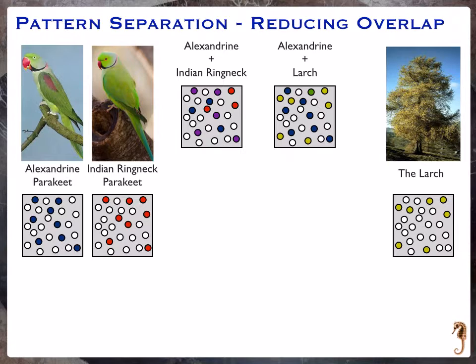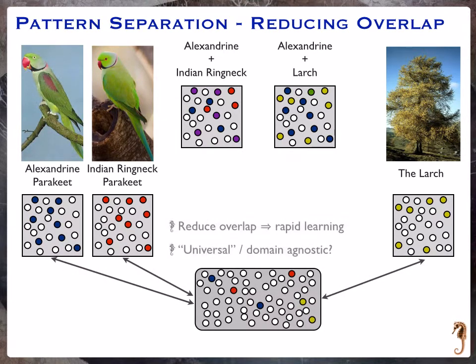The solution is a structure called the hippocampus, and in particular a structure called the dentate gyrus, where we do something called pattern separation. We take these kinds of representations — like the Alexandrian, the Indian ring-neck, and the larch — and instead turn them into something typically thought of as a sparse code: very few units on at a time, and also one in which they are not overlapping. This is pattern separation — separating the way we represent these.